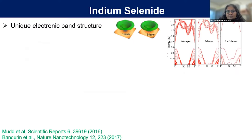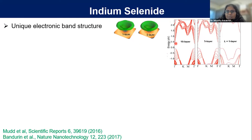Indium selenide has a unique electronic band structure — the valence band looks like an inverted Mexican hat. If you look at the band structure from bulk to monolayer, in a 10-layer sample, the conduction band minimum is at the gamma point and the valence band maximum is close to gamma. But when the layer thickness is reduced, the conduction band stays at the same place while the valence band moves towards the K point, so that in the monolayer we get an indirect band gap.